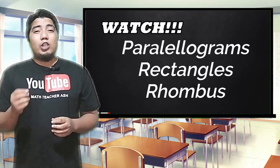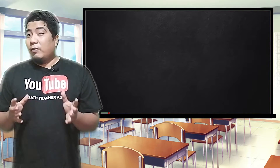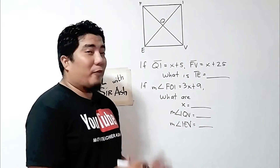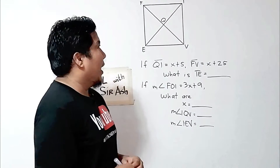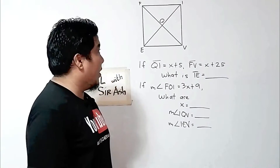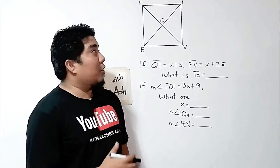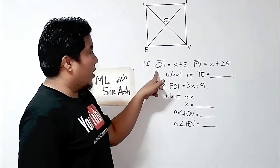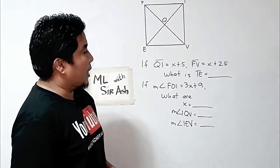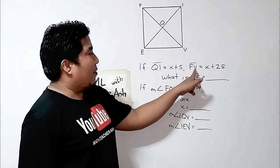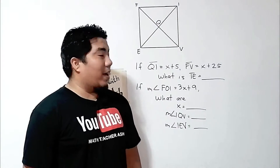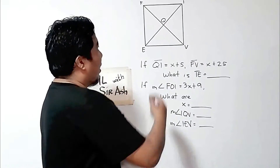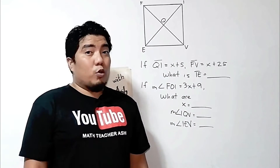For you to understand even deeper in solving various problems involving squares, let us go to our discussion board. We are here now at our first given figure for squares. We have the figure FIVE, where the diagonals intersect at point Q. If line segment QI is equal to X plus 5, and FV is equal to X plus 25, what is the measurement of line segment IE? Remember that in a square, the diagonals are congruent, the same as in the property of a rectangle.